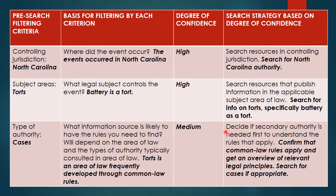The next step is to decide if secondary authority is needed first to understand the rules that apply. We confirm our degree of confidence, confirm that common law rules apply, and get an overview of relevant legal principles. Then search for cases if appropriate. This column shows our decision making — what our rationale is — and we have a search strategy of what we're going to look for and where we're going to look. Right now we're looking for the bookshelf or the database, not for the answer yet.